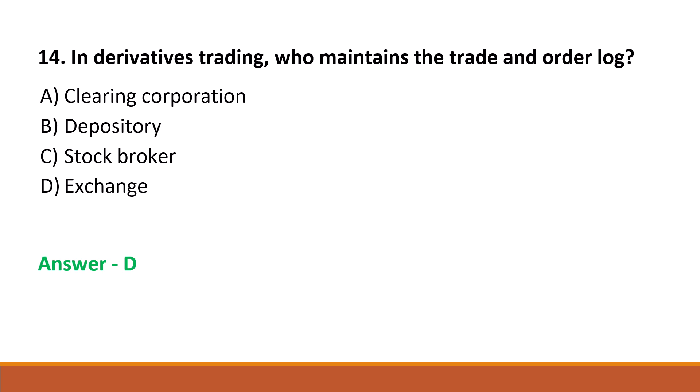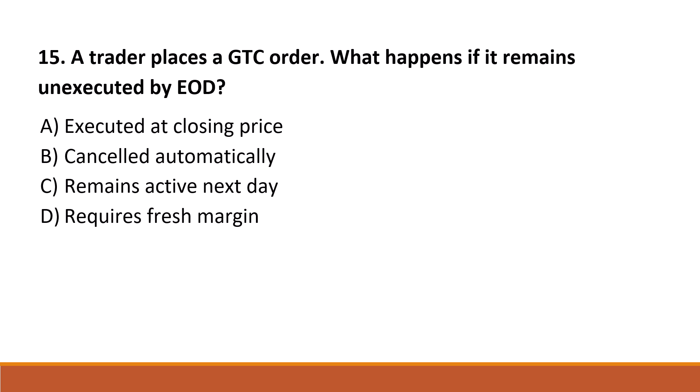Next question: a trader places a GTC order. What happens if it remains unexecuted by end of the day? Option A: executed at closing price. Option B: cancel automatically. Option C: remains active next day. Option D: request press margin. The correct answer is Option C, remains active next day.